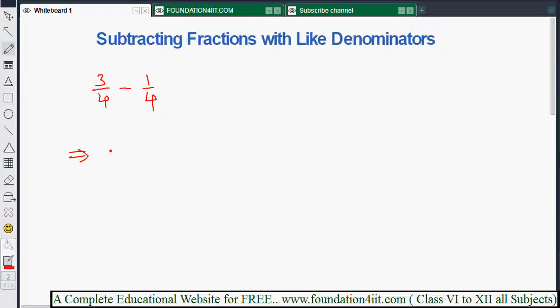Whenever denominators are the same, simply subtract the numerators directly. Here the numerator is 3 and this is 1, so 3 minus 1 equals 2. The denominator we write as is, so it's 2 by 4.